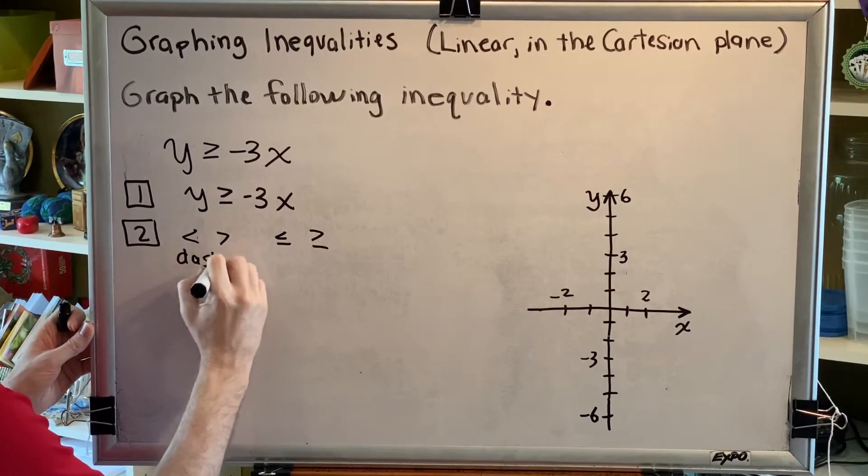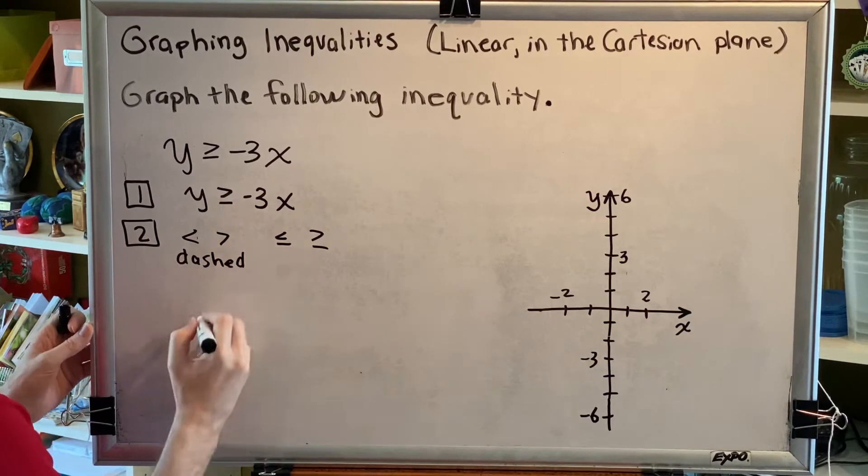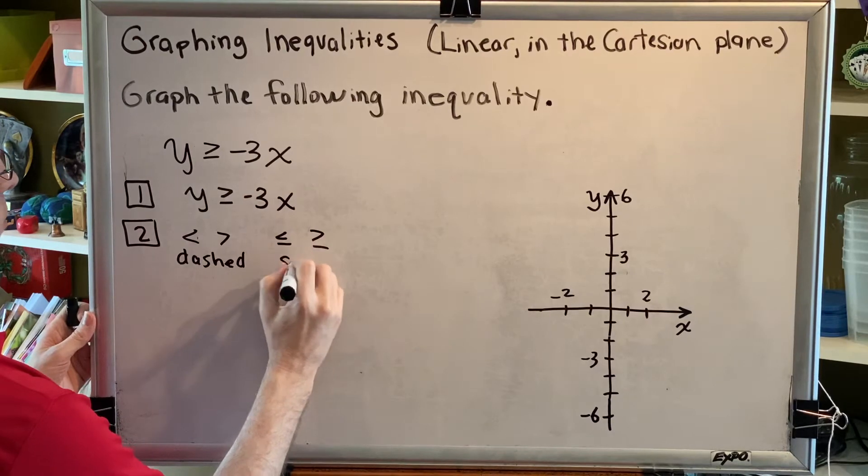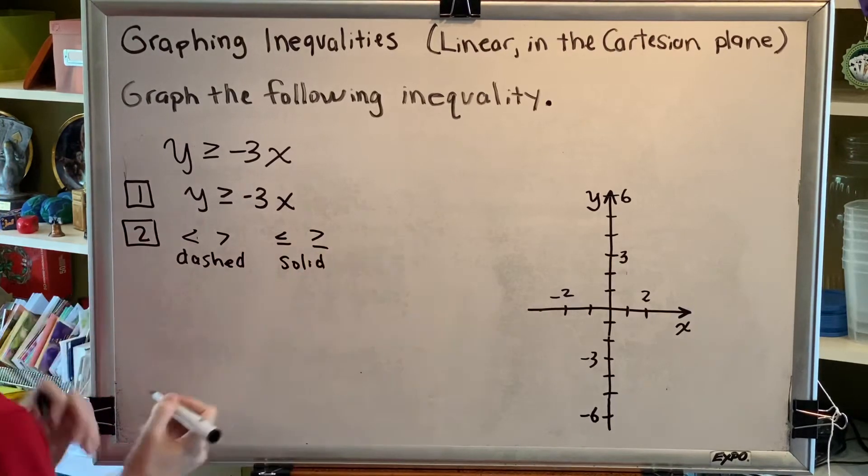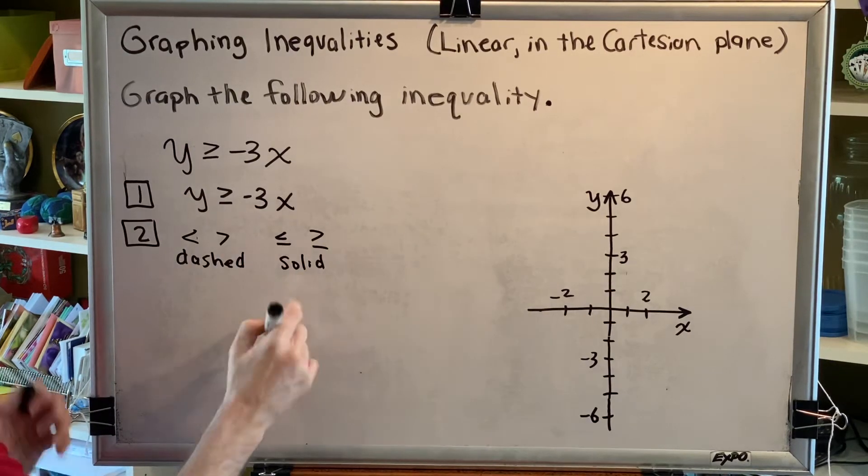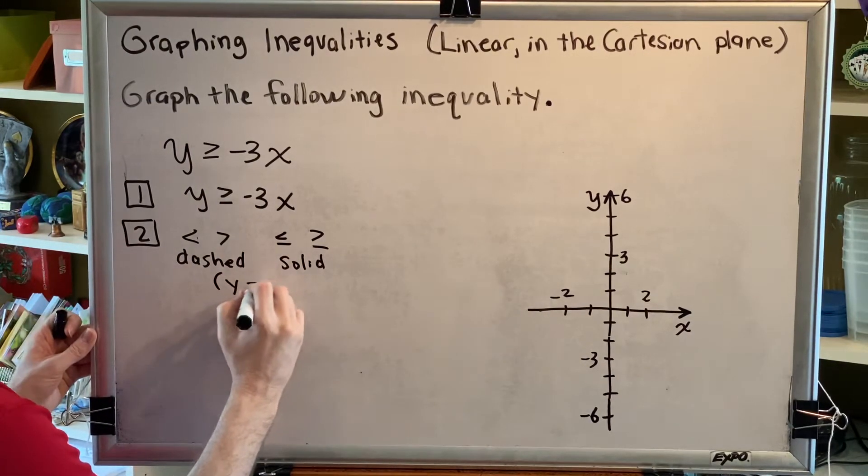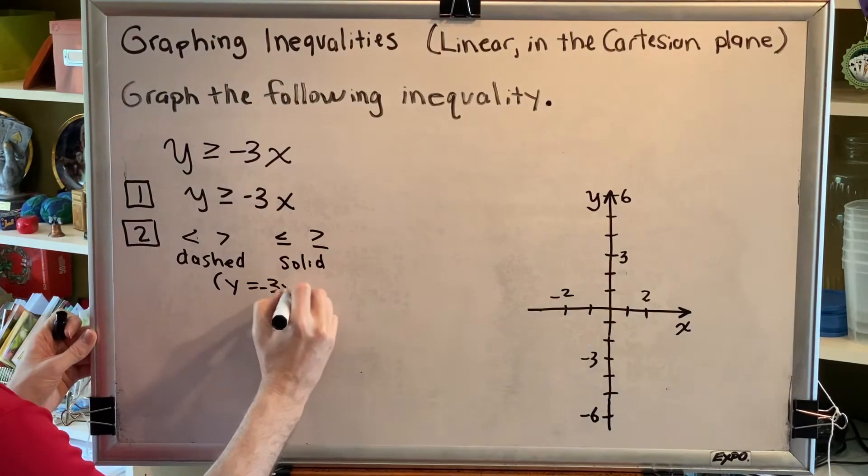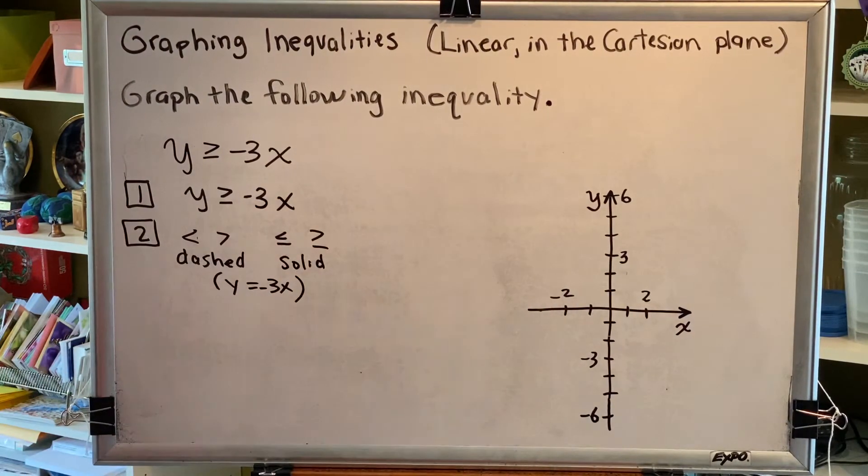Well, for these two symbols, we would use a dashed line type, and for these two symbols, we would use a solid line type. Our inequality symbol is greater than or equal to, so we use a solid line type, and we're going to graph y equals negative 3x using a solid line.